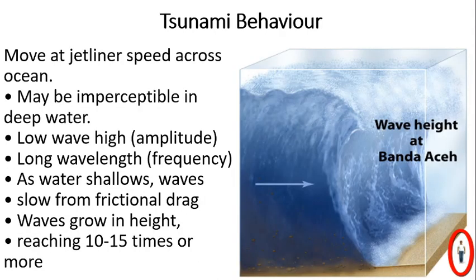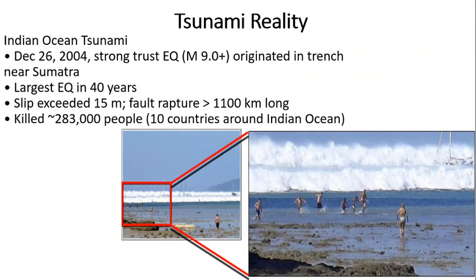Tsunami behavior: a tsunami will move at the speed of a jet liner on the ocean surface and may not be easily identified. There are two kinds of waves — low wave with high amplitude and long wavelength with very high frequency. If the depth of the sea is very low, the tsunami effect will be less; but if the depth increases, the effect increases greatly, with waves reaching 10 to 15 times the normally observed height. The 2004 Indian Ocean tsunami involved a fault rupture of 1,100 kilometers with slip exceeding 15 meters, taking lives from 10 countries.